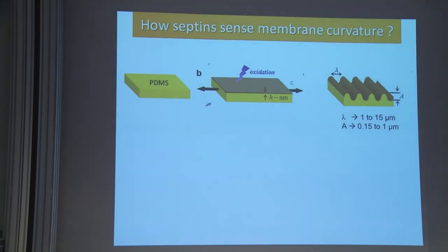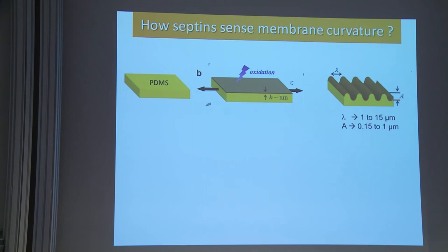To go further, we produced some wavy substrates. We take PDMS, stretch it, then make an oxidation layer, and by relaxing the stress we obtain a wavy pattern with two layers of different mechanical properties. This is made in collaboration with the team of João Cabral at Imperial College London, and we are able to tune the wavelength and amplitude of the substrate in the micrometer range, which is exactly the range we are interested in.